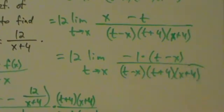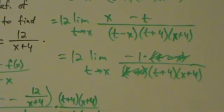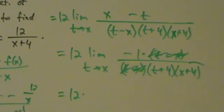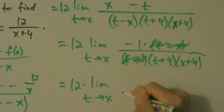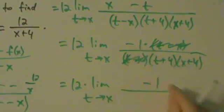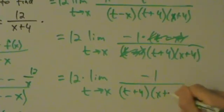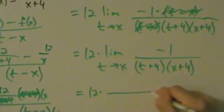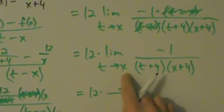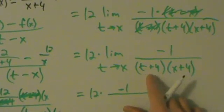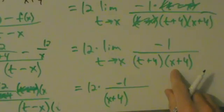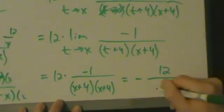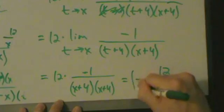Now this equals 12 times the limit as t approaches x of negative 1 times t minus x, all divided by t minus x times t plus 4 times x plus 4. Now we can cancel the t minus x on top and bottom. After canceling, we have negative 1 over t plus 4 times x plus 4. Now we can do direct substitution — replace all t's with x — giving us 12 times negative 1 over x plus 4 times x plus 4. So we get negative 12 over x plus 4 quantity squared, and that's our derivative.